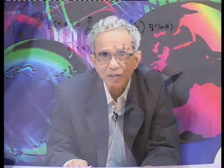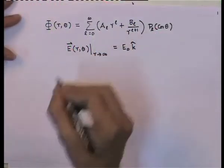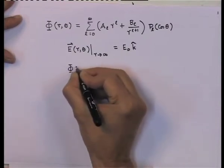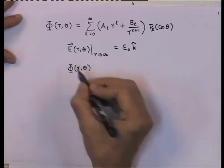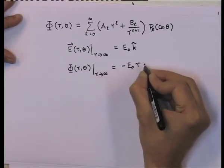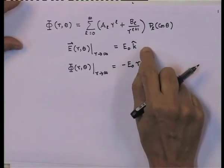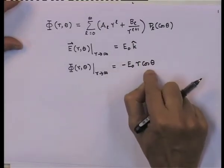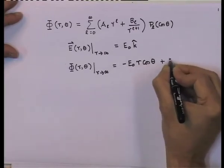We start with a few observations. The first is that the electric field at far distances from the sphere is not expected to be very different from the uniform field we started with. So as r goes to infinity, E(r, theta) is E_0 times k. Correspondingly, the potential at large distances can be written as minus E_0 r cos theta, which is just z, since the electric field is along the z direction. So the potential must be minus E_0 times z plus a constant C.